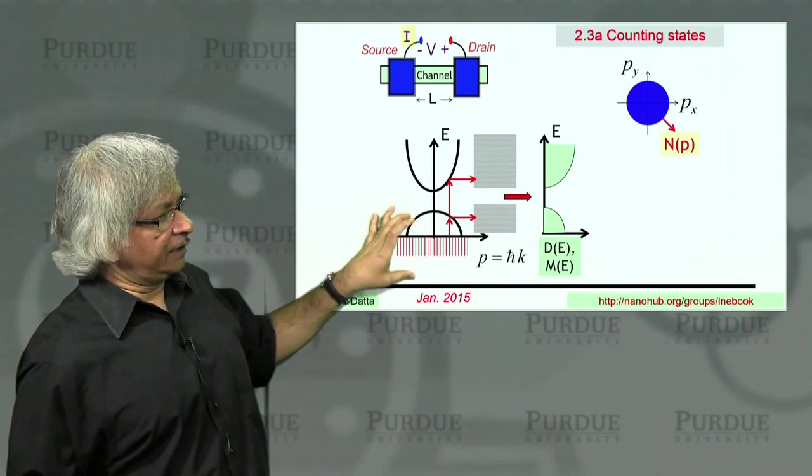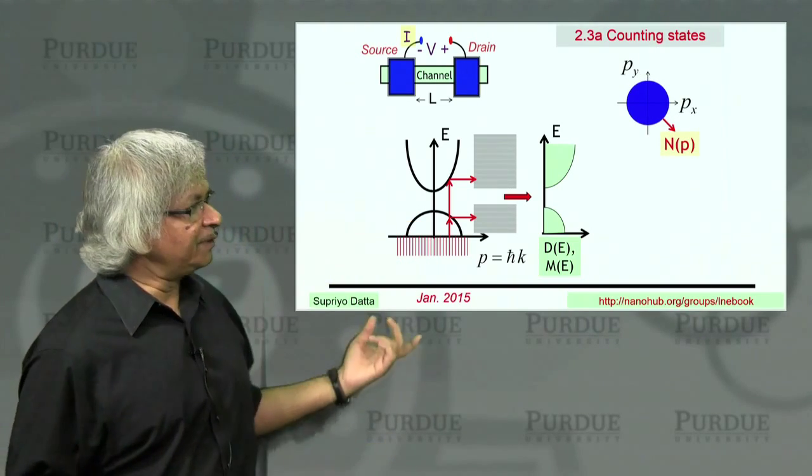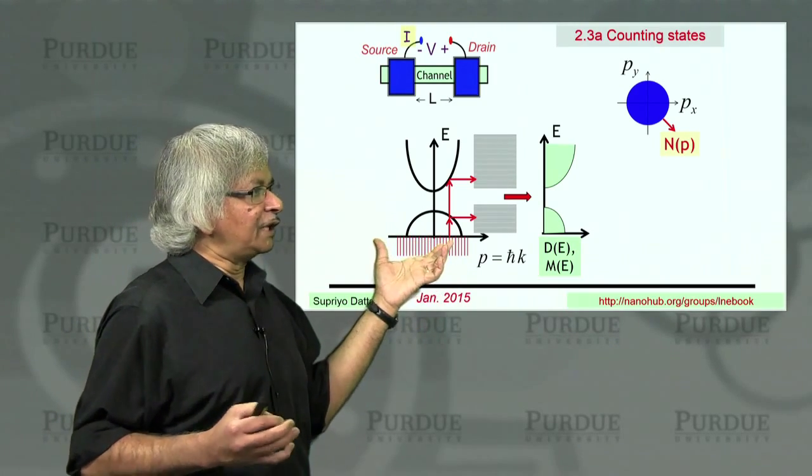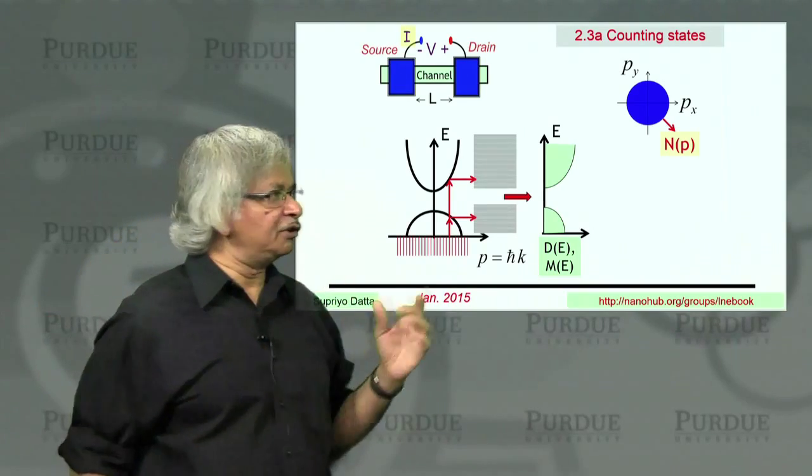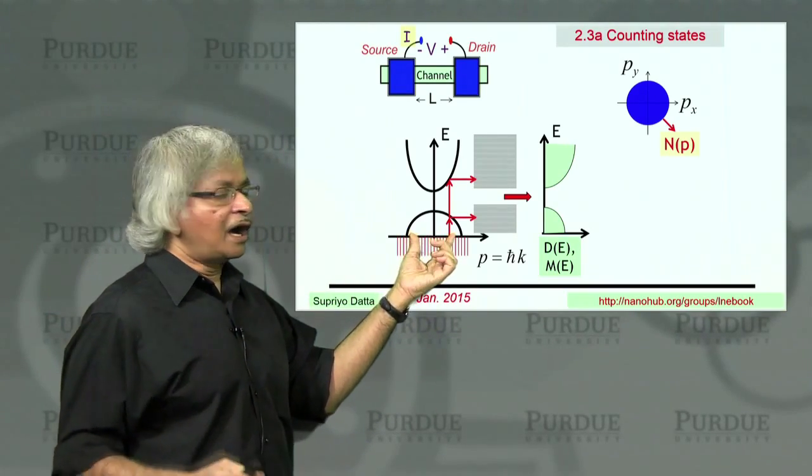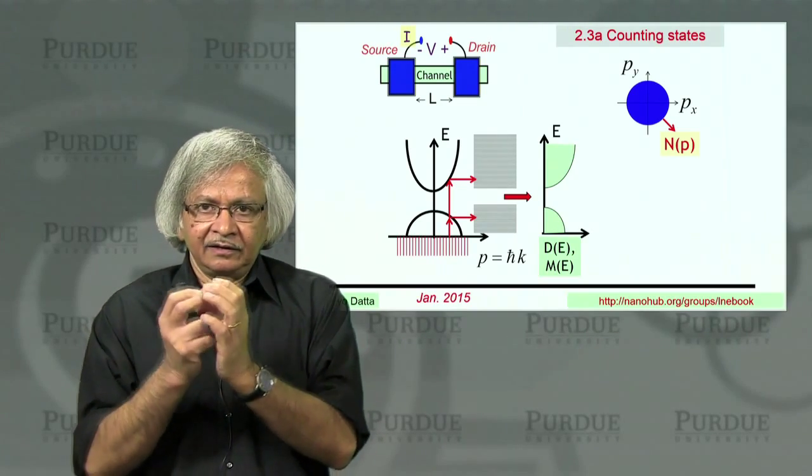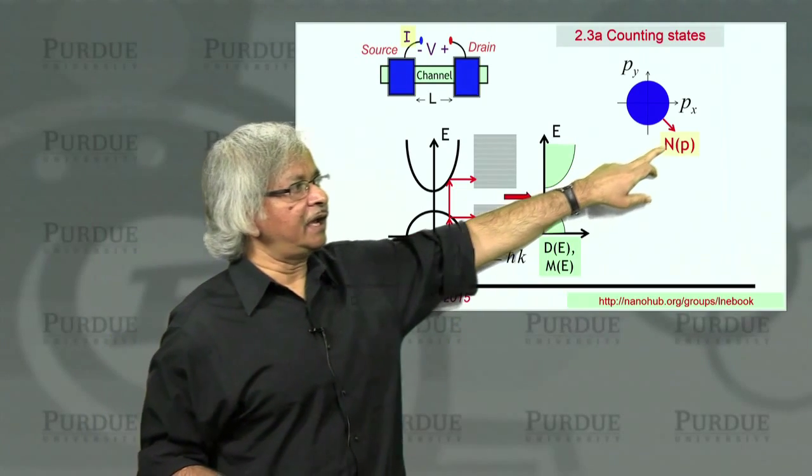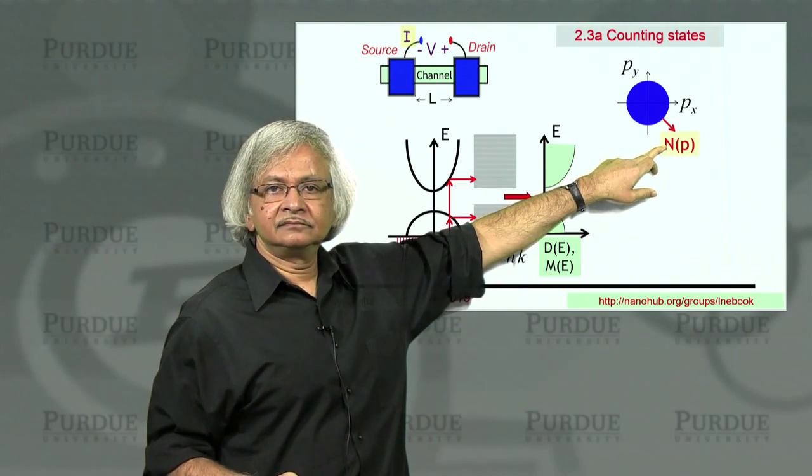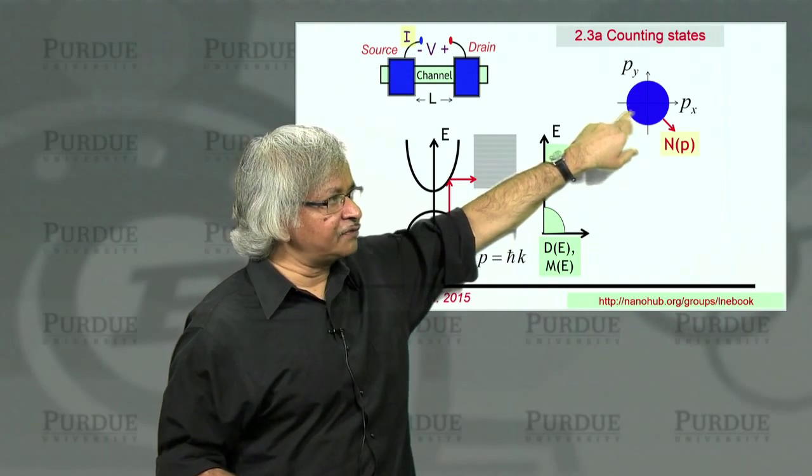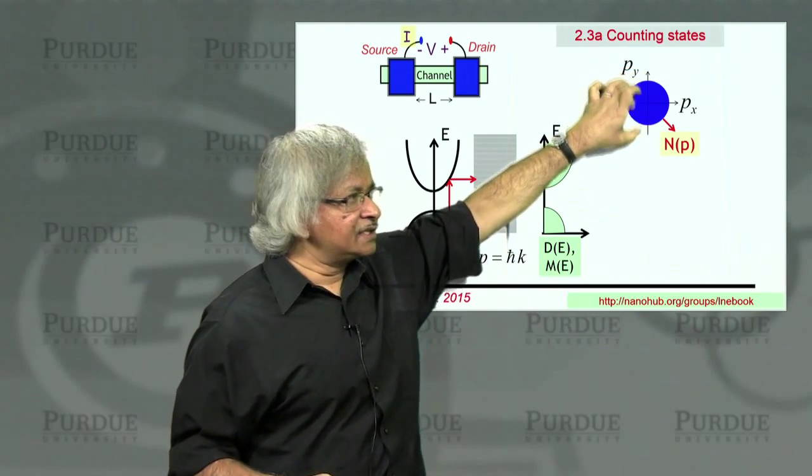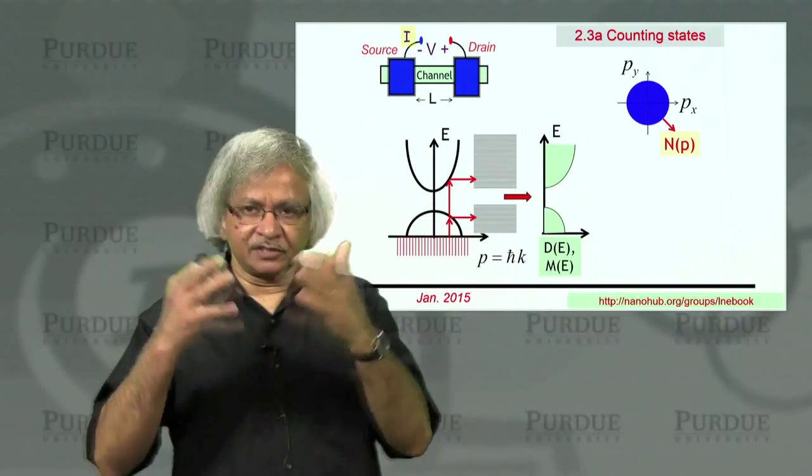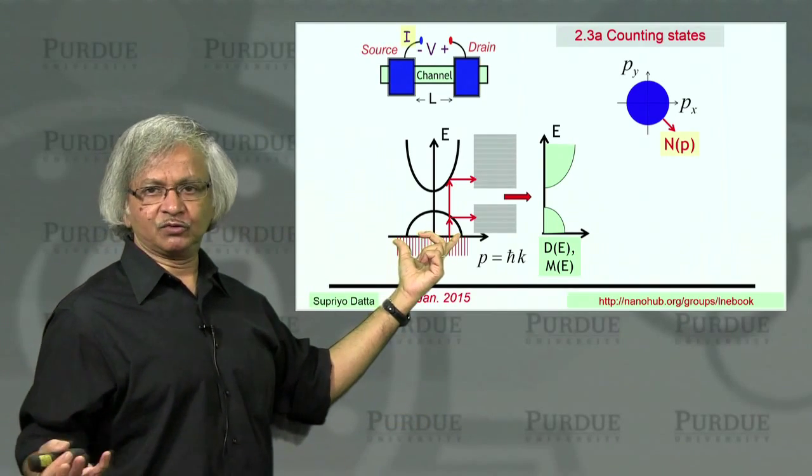What we'll be doing in this lecture is trying to count this discretization in momentum. What we'll ask is that given a certain maximum value of momentum p, how many allowed states are there whose momenta is less than that? So we define this function N(p), which tells us the number of states within a circle of radius p - circle if it's two dimensions, sphere if it is three dimensions, and just a line if it is one dimension. In fact, we'll do all those three cases.